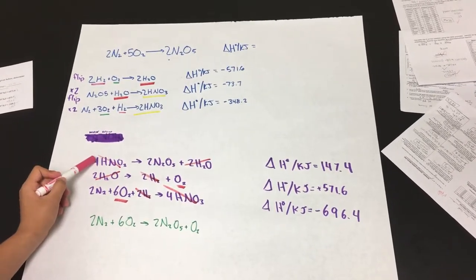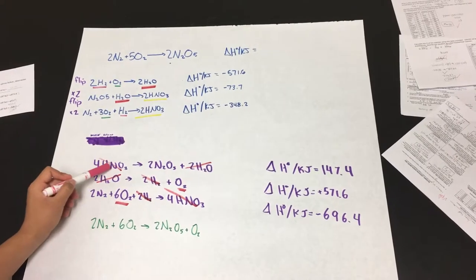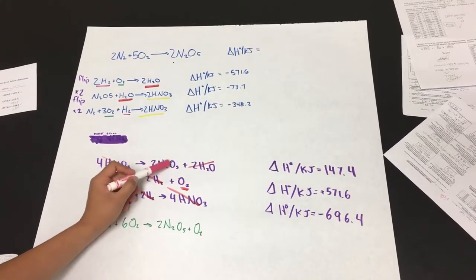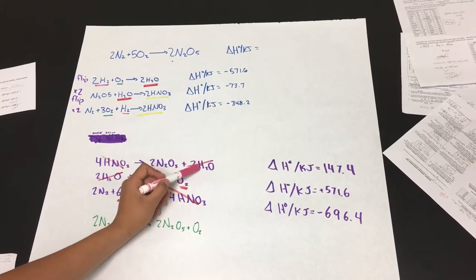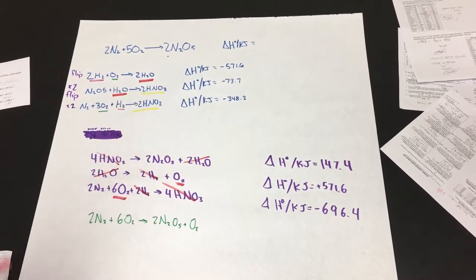It's 4HNO3 yields 2N2O5 plus 2H2O from that.